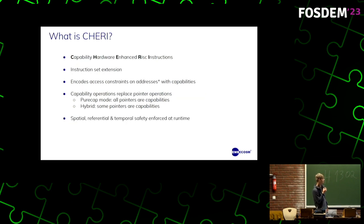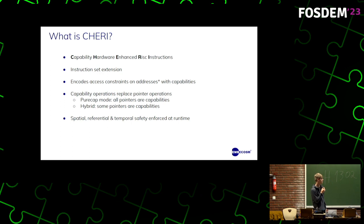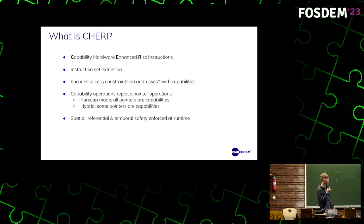So what is CHERI? It's an acronym: Capability Hardware Enhanced RISC Instructions. It's best described as an instruction set extension which can be adapted and applied to different architectures. The main feature of CHERI is that you can encode access constraints on memory addresses using things called capabilities. Capabilities have metadata alongside memory addresses that allow you to specify these access constraints, and they can only be operated on using capability operations, which replace normal pointer operations. These operations utilize the metadata to enforce those access constraints.